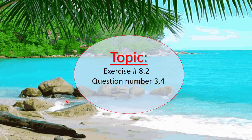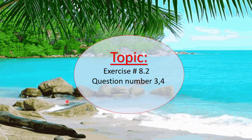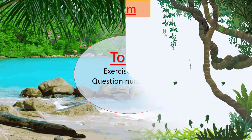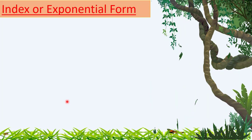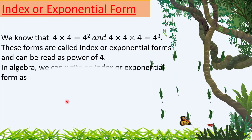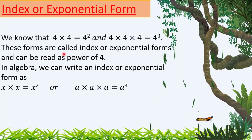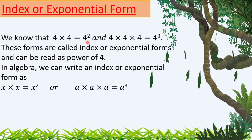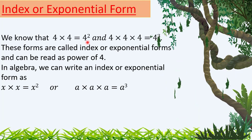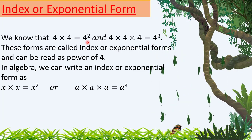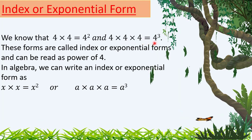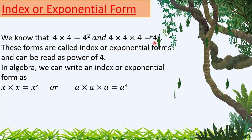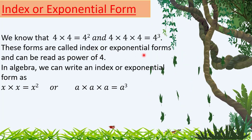Now the topic is Exercise 8.2, Question Number 3 and 4. Before starting Question 3, we will study index or exponential form. We know that 4 × 4 = 4 raised to the power 2, and 4 × 4 × 4 = 4 raised to the power 3. These forms are called index or exponential forms and can be read as a power of 4.